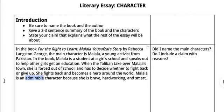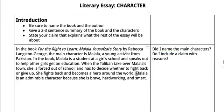For other characters, you might say that they are unadmirable, which would be a character that you would not look up to. Before I move on, I want to make sure that I have named the main characters — my main character is Malala — and I also want to make sure that I include a claim with reasons, which is in my last sentence. Once you've done that, you're good to move on.